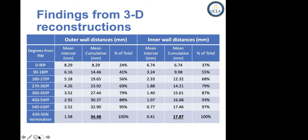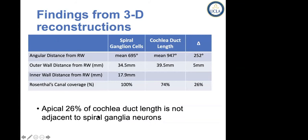The Cochlear 632 slim perimodiolar had exactly the same coverage of spiral ganglion neurons as the MED-EL FLEX SOFT, which is a 31-millimeter electrode. I didn't think of it that way until I took measurements in these studies. As Fred always talked about, the apical 25% of the cochlear duct is not adjacent to the spiral ganglion neurons — the neurons get their projections from below. This is a very important fact to remember.